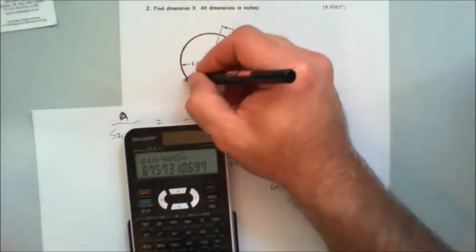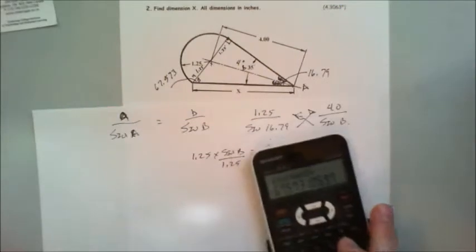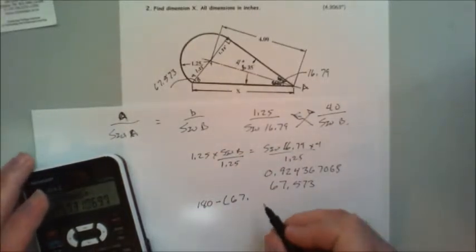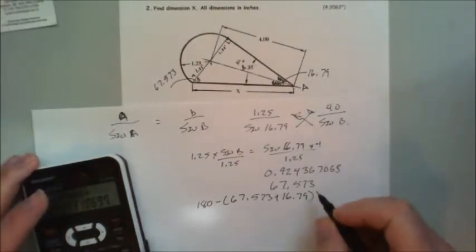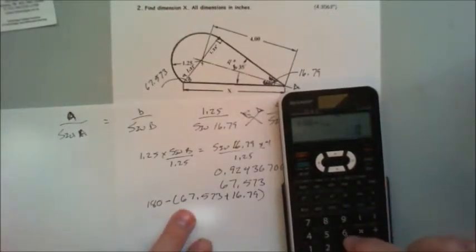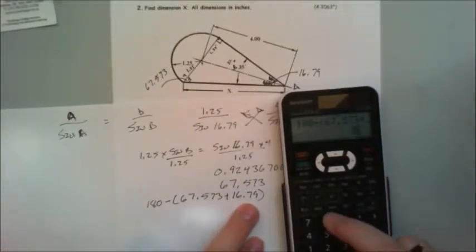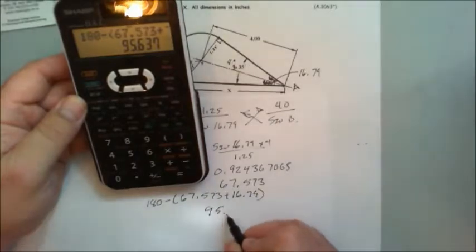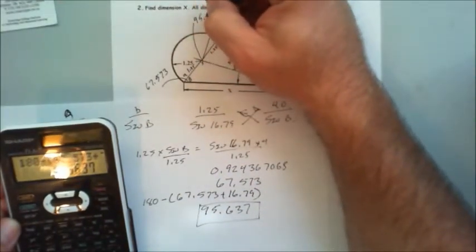So this guy here, B equals 67.573. So I'm going to say 180 minus 67.573 plus 16.79. 180 minus bracket 67.573 plus 16.79 equals 95.637. X equals 95.637.